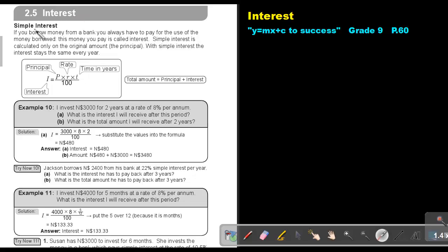Interest. Simple interest. If you borrow money from a bank, you always have to pay for the use of the money borrowed. This money you pay is called interest. Simple interest is calculated only on the original amount, the principal. With simple interest, the interest stays the same every year.